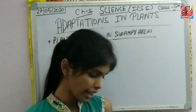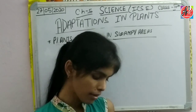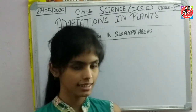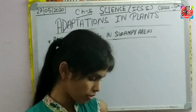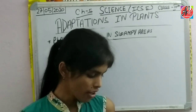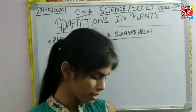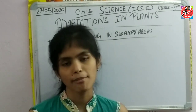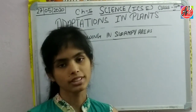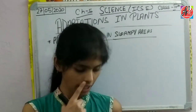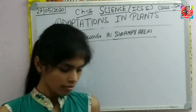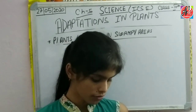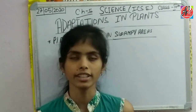Breathing roots also help to absorb water and minerals that are required to carry out photosynthesis. For example, mangroves have breathing roots. Mangrove trees, which grow in swampy areas, have breathing roots.